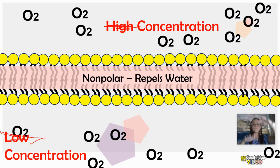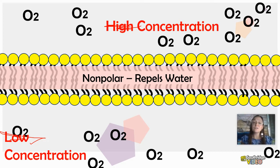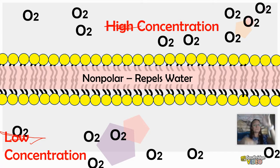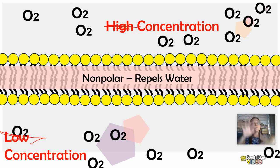Eventually equilibrium would be reached. The molecules would not stop moving — they would be moving up and down through that membrane, just at equal rates. So it would be in equilibrium.